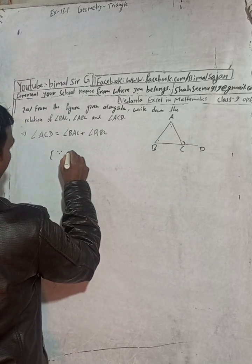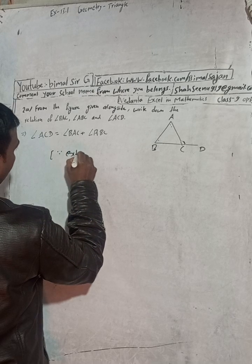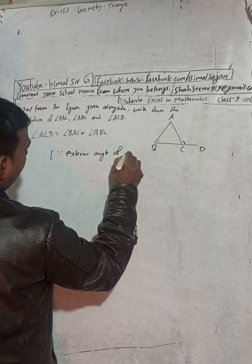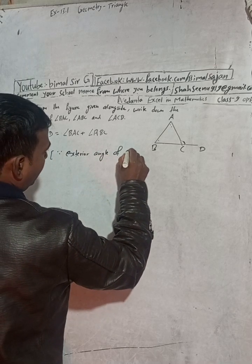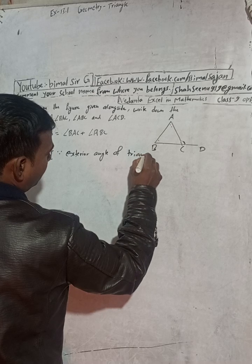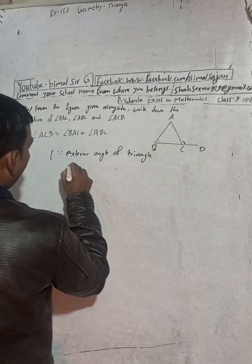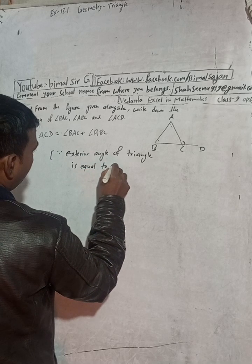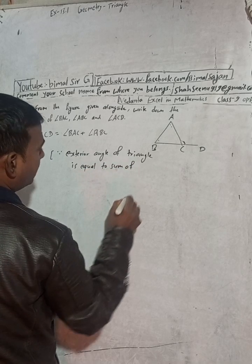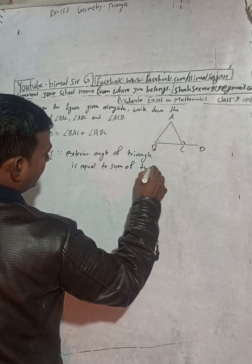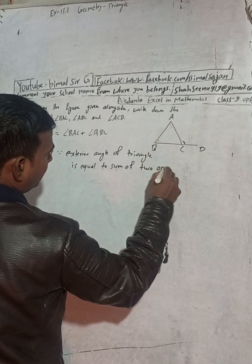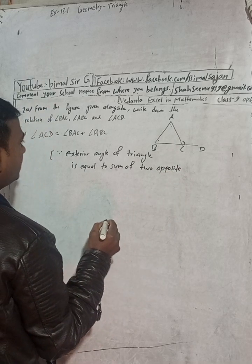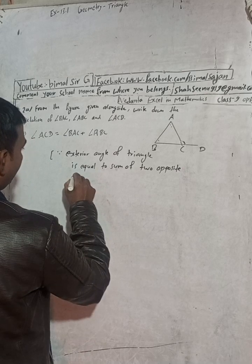This is the relation because exterior angle of triangle is equal to sum of two opposite interior angles.